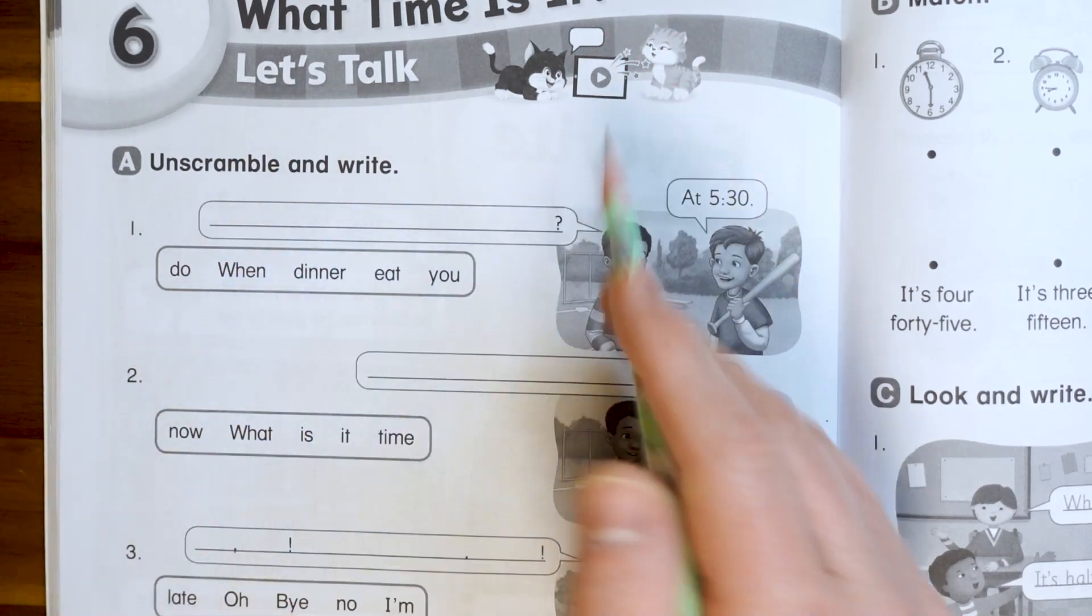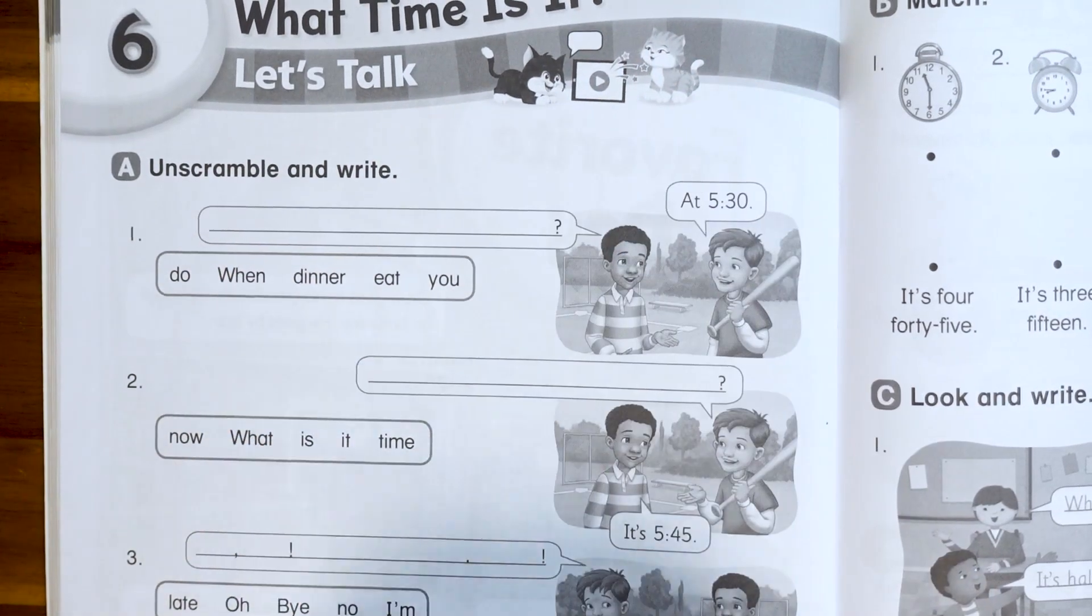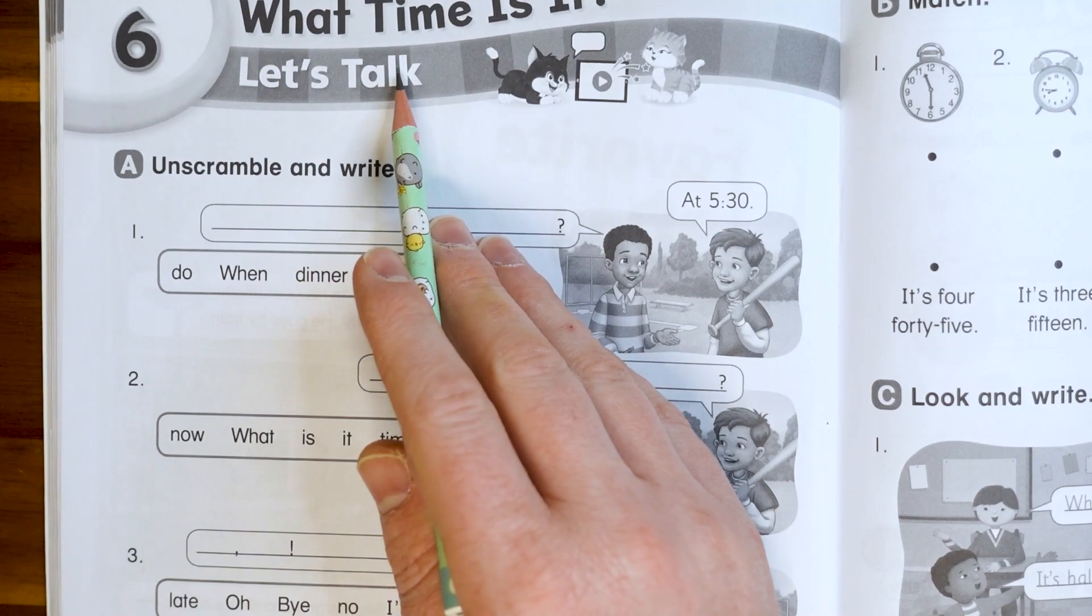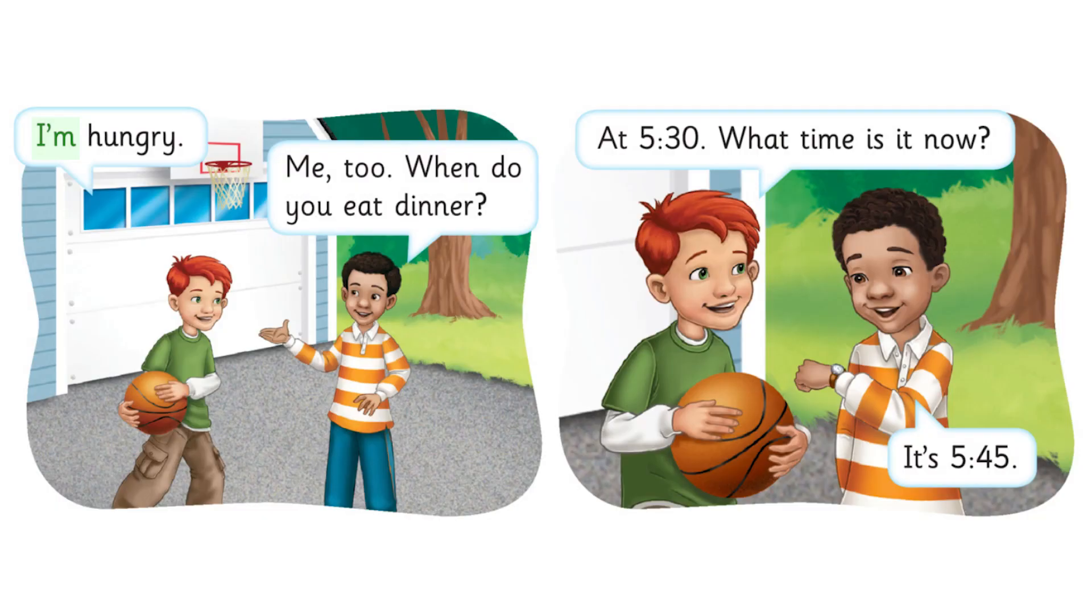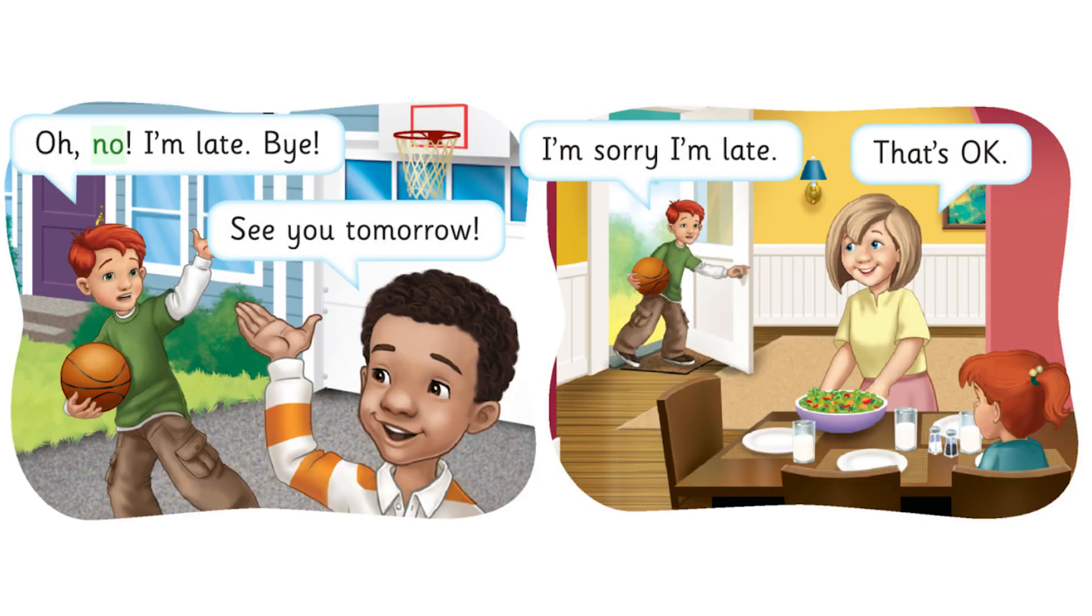In this page, we're going to remember this dialogue from the Let's Talk part, and then we're going to do part A. So here was the dialogue. I'm hungry. Me too. When do you eat dinner? At 5:30. What time is it now? It's 5:45. Oh no! I'm late. Bye. See you tomorrow. I'm sorry I'm late. That's okay.